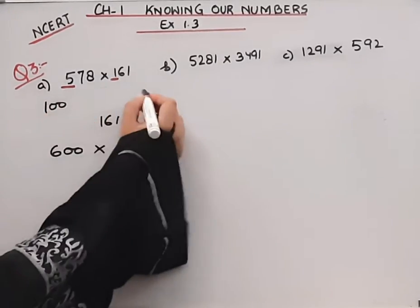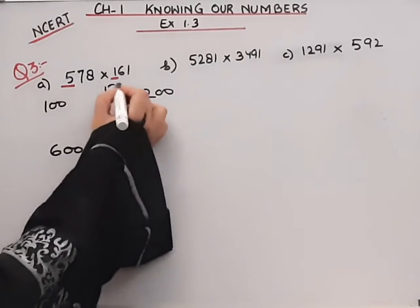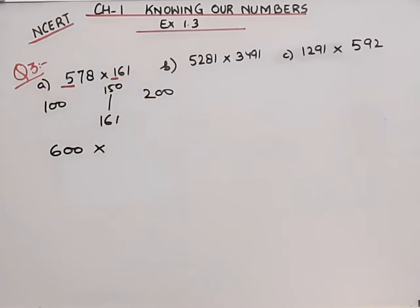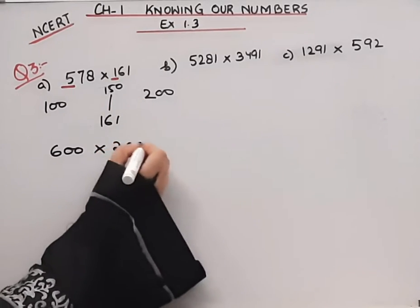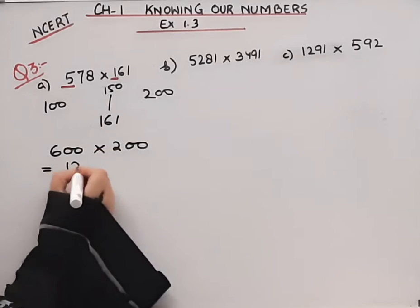So this will become 600 or 200. This number is 100, this number is 200. So I will multiply it. 600 times 200 is 12.